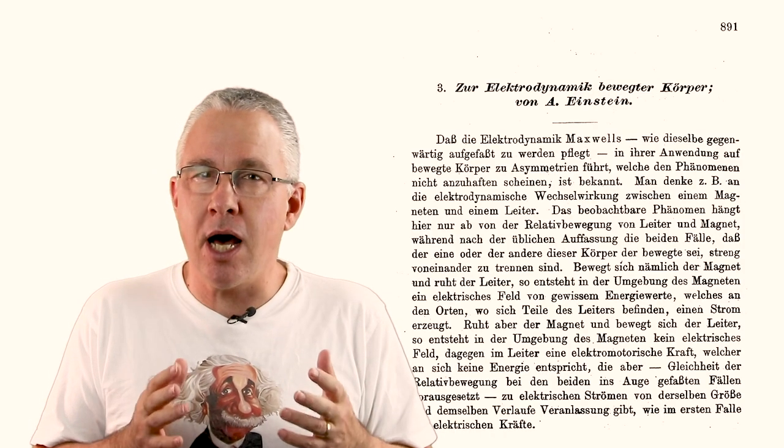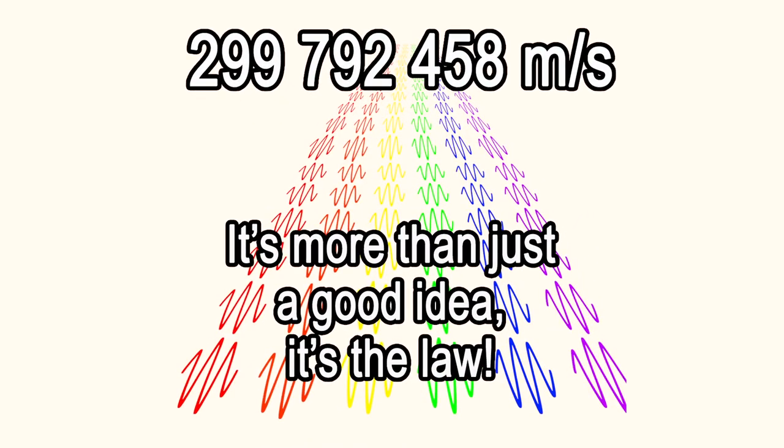Now one of them, which he called on the electrodynamics of moving bodies, Einstein argued that time was not absolute. So when you're analyzing motion, time is relative, but rather the speed of light has to be absolute.